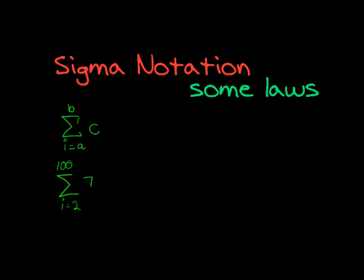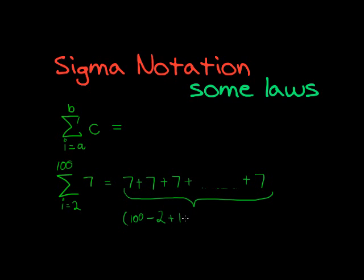But instead what we can do is see, it's just going to be 7 plus 7 the whole time because there's no i to substitute. So it's just 7 plus 7 plus 7. For how many times will we add 7? That's maybe the question. How many times are we going to add 7?